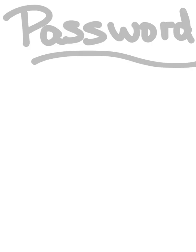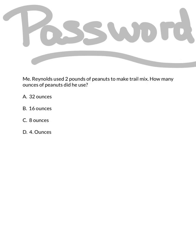Now let's take a look at today's password for tonight's lesson. Mr. Reynolds used two pounds of peanuts to make trail mix. How many ounces of peanuts did he use? Is it A. 32 ounces, B. 16 ounces, C. 8 ounces, or D. 4 ounces? Be sure to record your answer in your journal and bring it with you to class tomorrow. I will see you then!